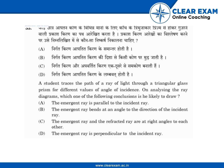Option A: the emergent ray is parallel to the incident ray. Option B: the emergent ray bends at an angle to the direction of the incident ray. Option C: the emergent ray and the refracted ray are at right angles to each other. Option D: the emergent ray is perpendicular to the incident ray.